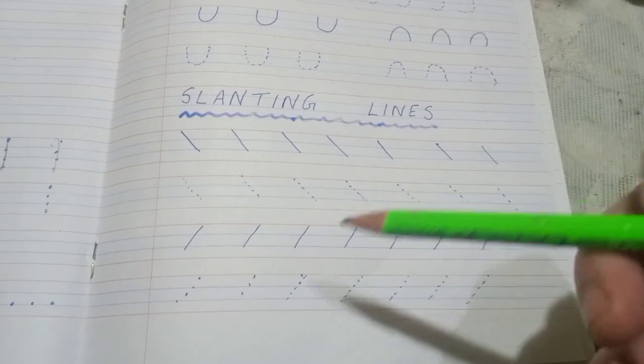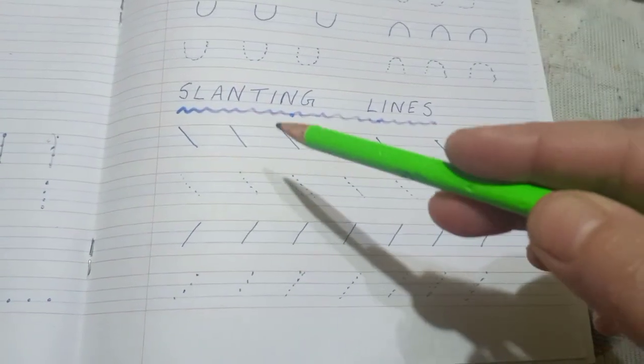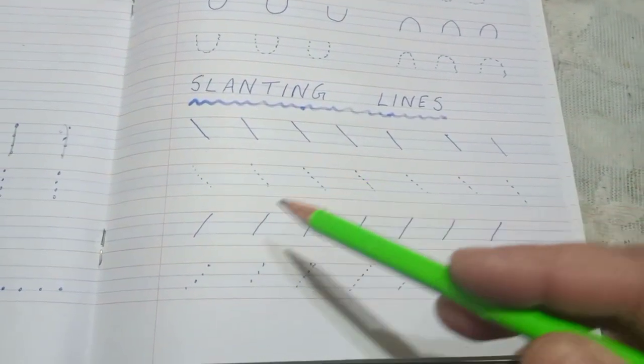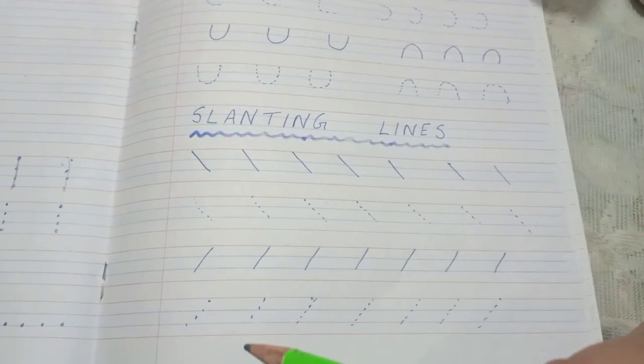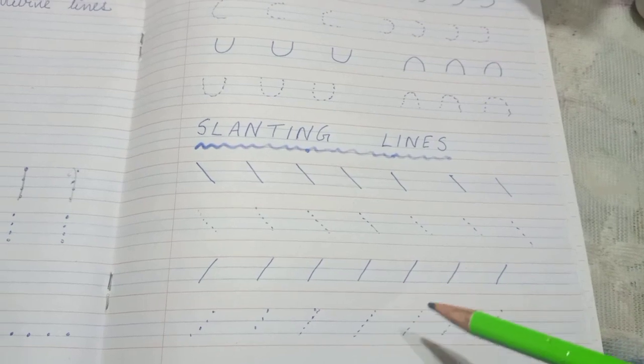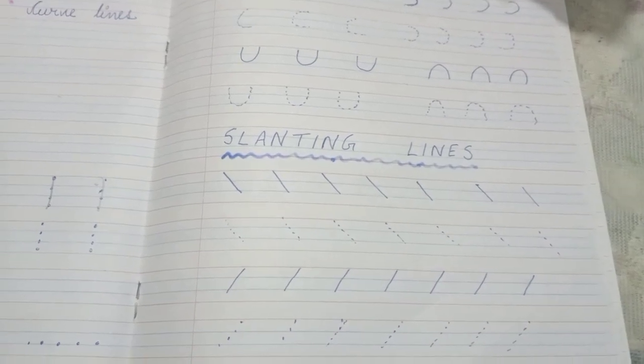Next, slanting line. Slanting means it is very easy to do. Slanting is the same way to make a slant.